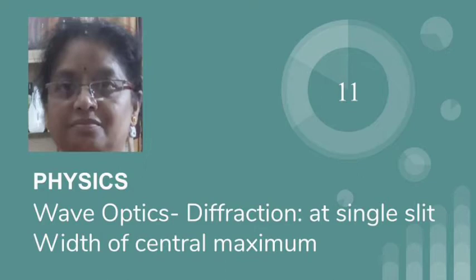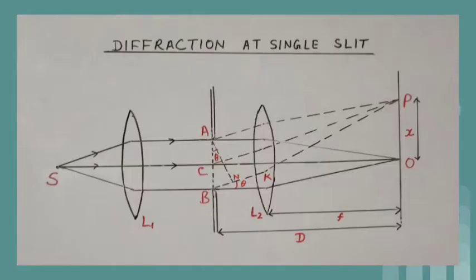According to Fresnel, diffraction occurs due to mutual interference of secondary wavelets originating from different points of the same wave front that is allowed to pass through the aperture.